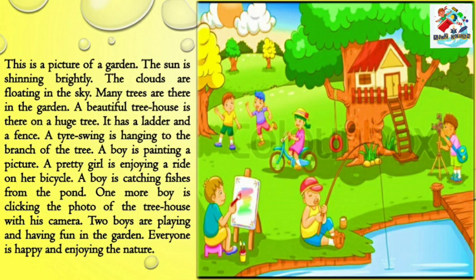One more boy is clicking the photo of the tree house with his camera. Two boys are playing and having fun in the garden. Everyone is happy and enjoying the nature. Now, children, you have understood how to write a picture composition — this is the perfect method of writing a picture composition.